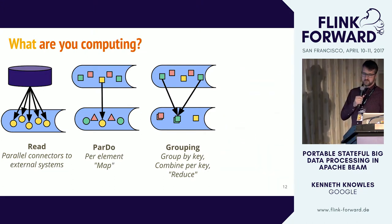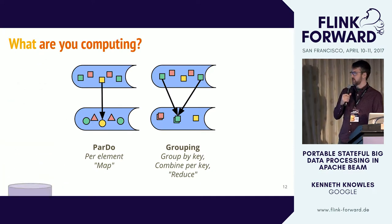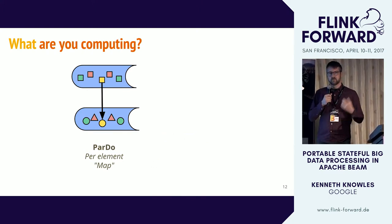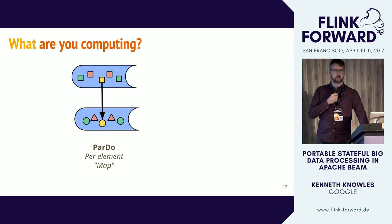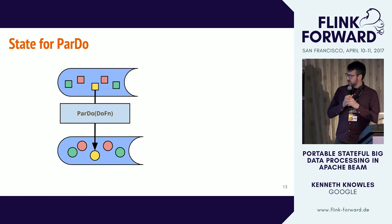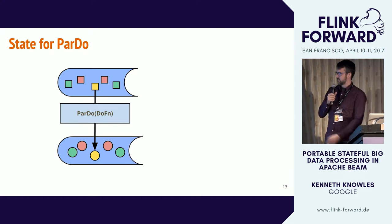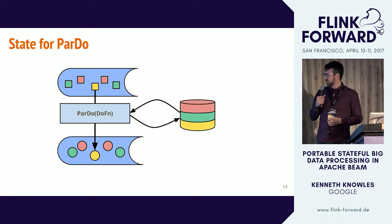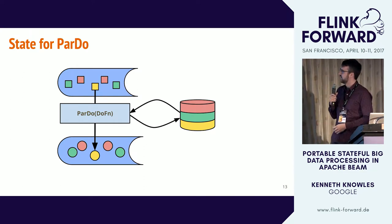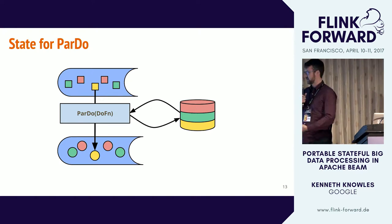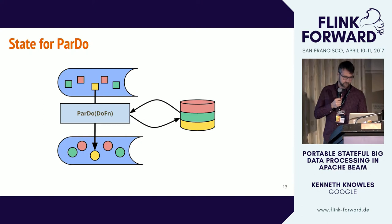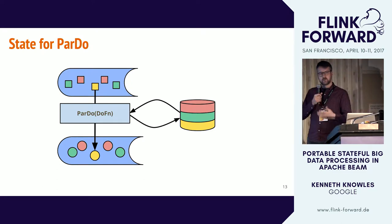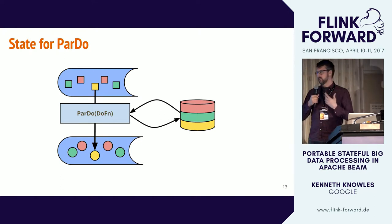I'm not going to talk about composites or parallel reads or grouping computations. The state that I mean is when you're doing a per-element computation and you need a little bit of mutable state on the side — this is part of the ParDo operation in Beam. Here I've put the ParDo operation between two p-collections. The yellow input square is being mapped to the yellow circle. The state this ParDo operation might have access to is partitioned by key — similar to keyed state in Flink. The state is partitioned into disjoint parts, which is fundamental to parallelism.